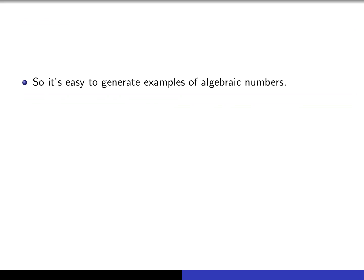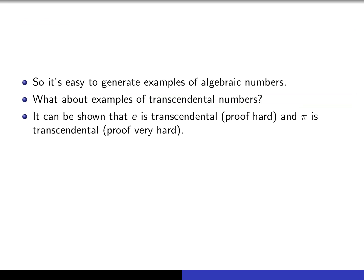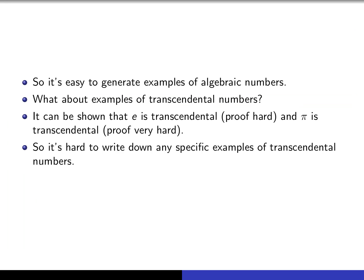We see that it's very easy to generate lots of examples of algebraic numbers — we've generated at least denumerably many such examples. Can we produce some examples of transcendental numbers, the real numbers which are not algebraic? It turns out that the number e is transcendental, and the number π is also transcendental, but the proofs of these things are really quite difficult. In fact, it's very hard to write down any specific examples of transcendental numbers.